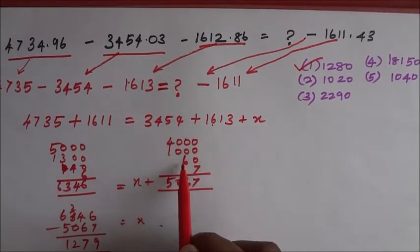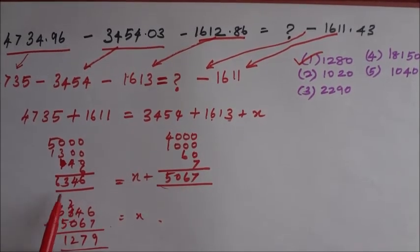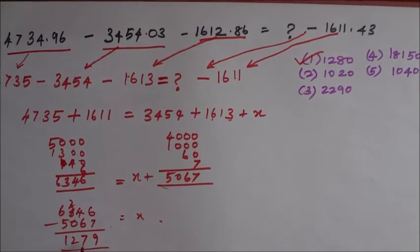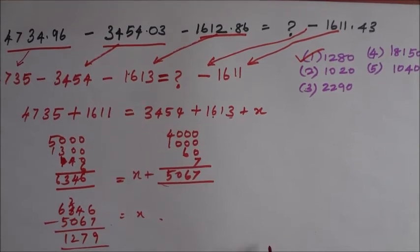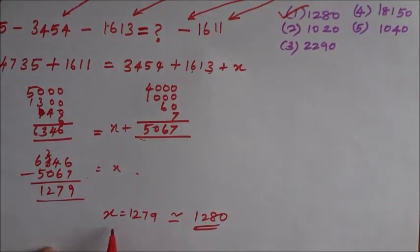The method: 3 plus 1 is 4, 4 plus 6 is 10, 5 plus 1 is 6, 4 plus 3 is 7. So they add 6346 minus 5067. 1280. X is equal to approximately equal to 1280.